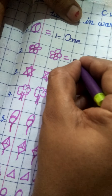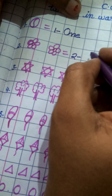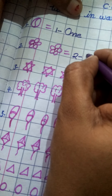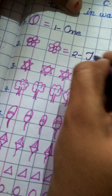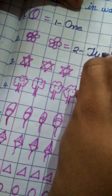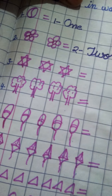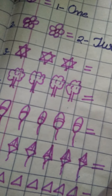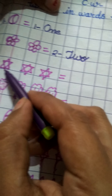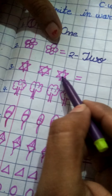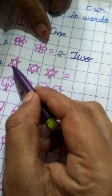Count karo ye. How many flowers? One and two. Aalik 'two' write karna hai. Again iski spelling: T — W — O. Two.